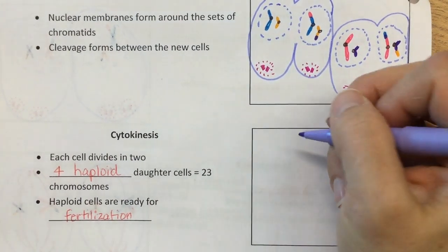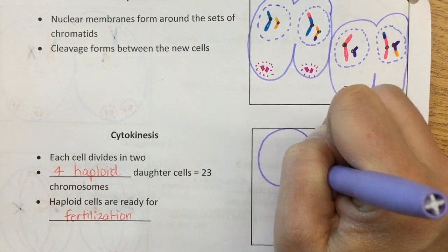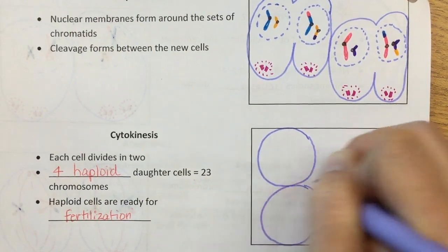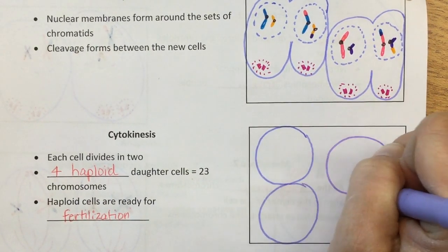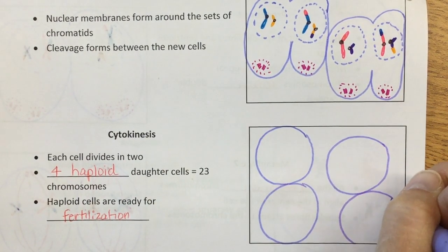So let's draw that carefully. Okay, we're going to have one cell, two cells, three cells, and four cells.